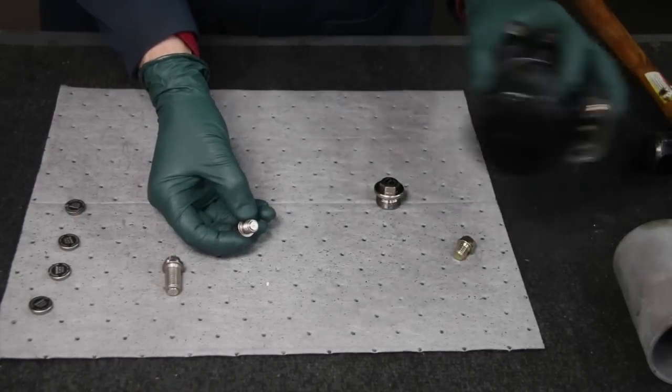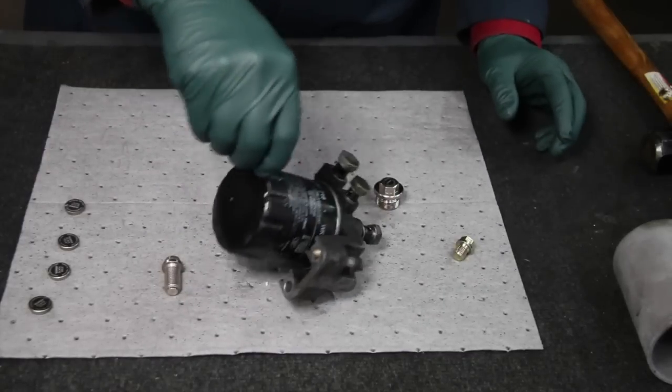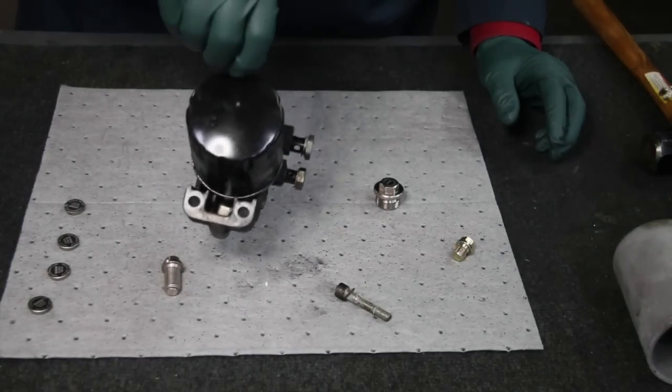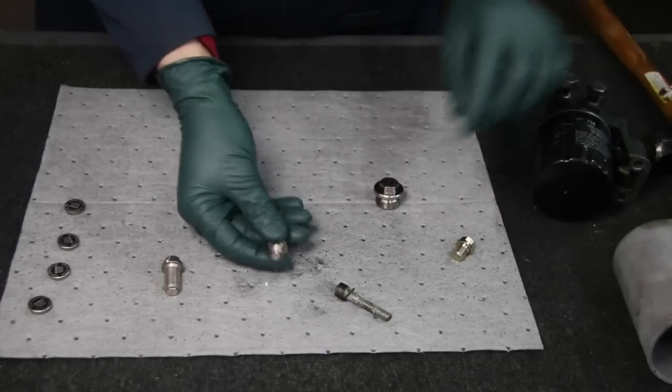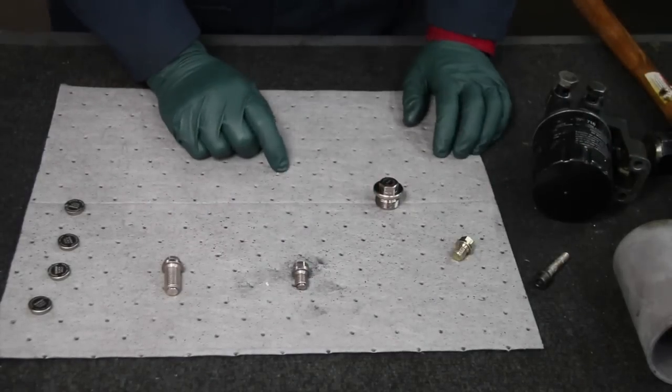And of course, look at the size of the magnet there. And you think, well how strong is that going to be? Well, watch it pick up this filter, just like that. You can see how strong that even that very small oil pan drain plug is.